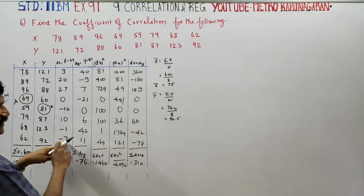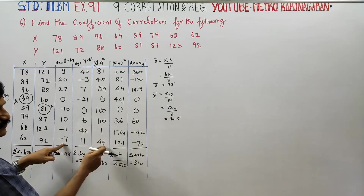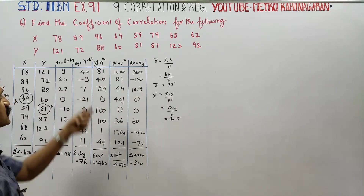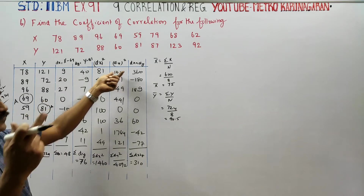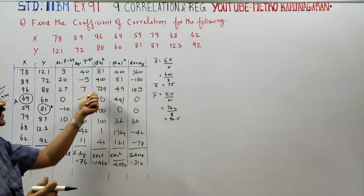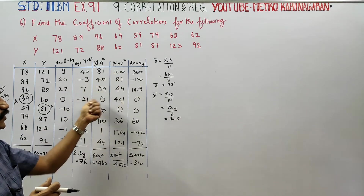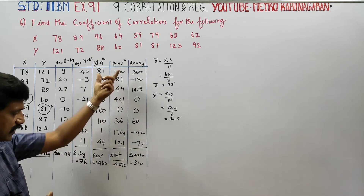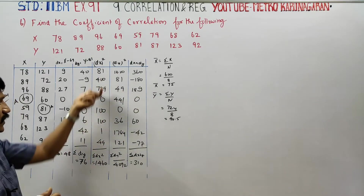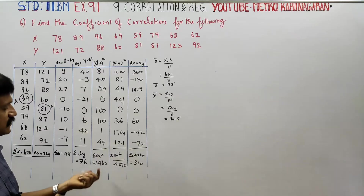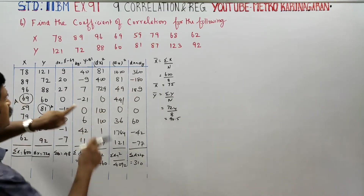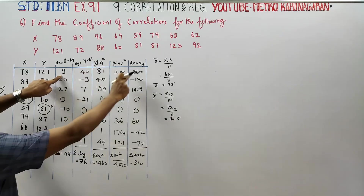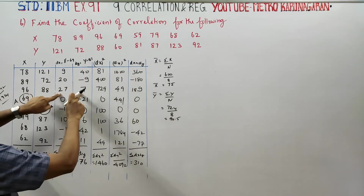Computing the products: 9 into 9, 7 into 7, 21 into 21 — put all of them and add. For the plus part: values like 4, 0, 9, 2. For DX squared: 4, 0, 4, 6, 0. For DX into DY: values 9, 4, 0, 36, and 27 into 7.